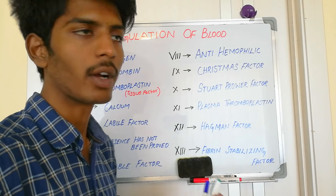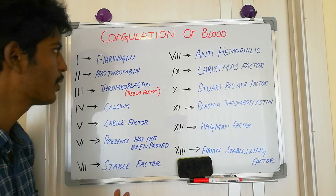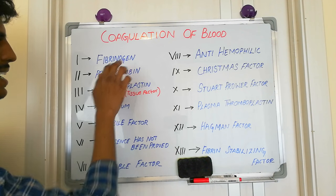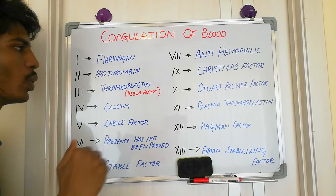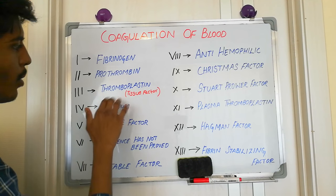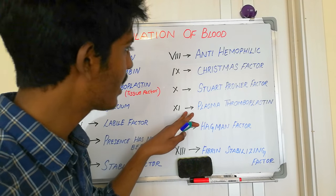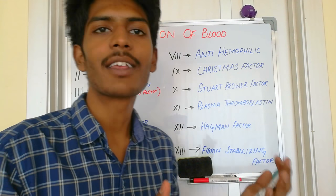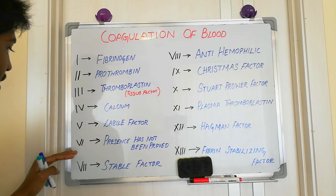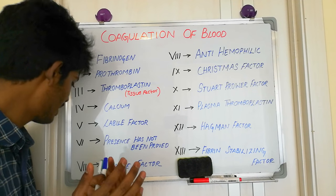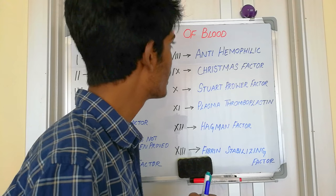Many substances are involved in the formation of the clot, including 13 factors. Factor 1 is fibrinogen — remember it is an inactive form, ending with 'gen'. Factor 2 is prothrombin, also an inactive form. Factor 3 is thromboplastin, also called tissue thromboplastin. Factor 4 is calcium. Factor 5 is labile factor. Factor 6 has not been detected. Factor 7 is stable factor.